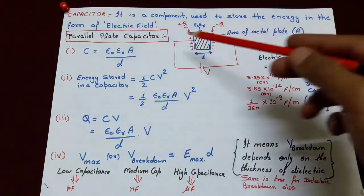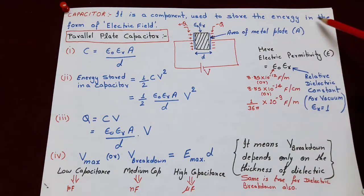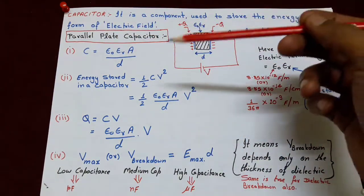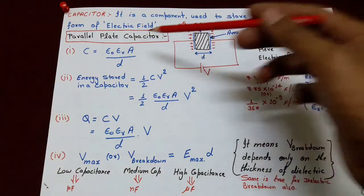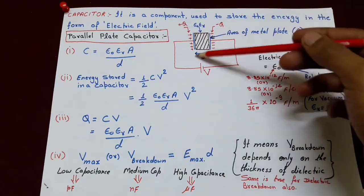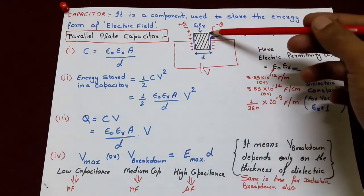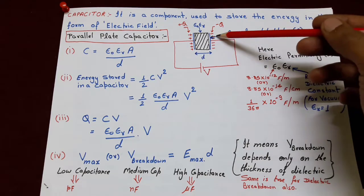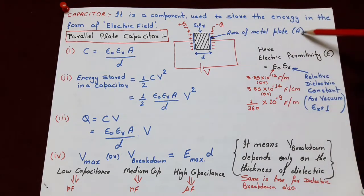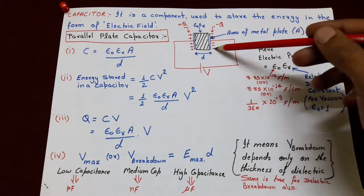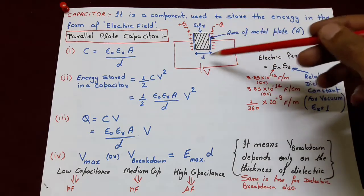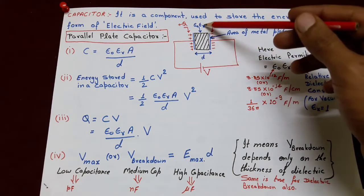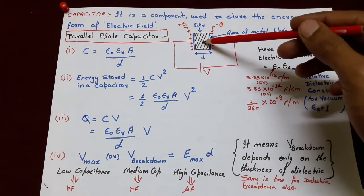A capacitor is a component which is used to store energy in the form of an electric field. First we talk about the parallel plate capacitor. In this, there are two metallic plates shown by these blue vertical lines. The area of each individual plate is capital A and the distance between the two plates is small d.